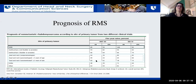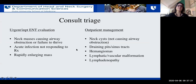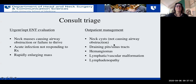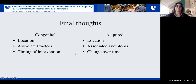To triage consults for a child with a neck mass: urgent cases include those causing airway obstruction, failure to thrive, acute infection not responding to antibiotics, or a rapidly enlarging mass — these need to be dealt with as inpatients. The majority are outpatient — masses not causing airway obstruction, draining pits or sinus tracts, hemangiomas, lymphatic malformations, and lymphadenopathies. The most important things are to think through whether the mass is congenital or acquired, where it presents, associated symptoms, whether it changes over time, and the timing of intervention.